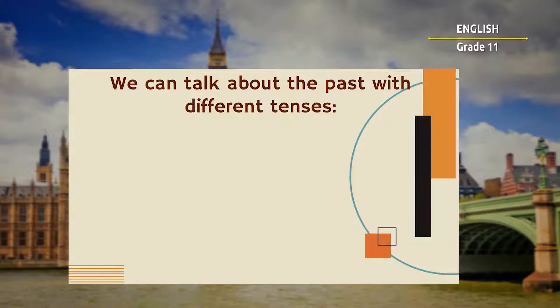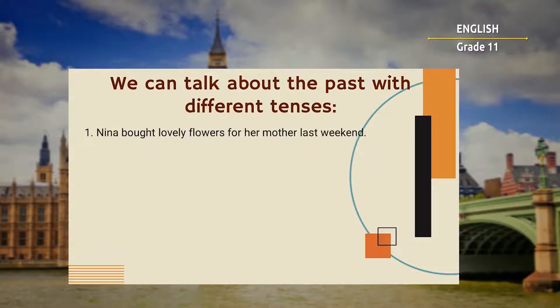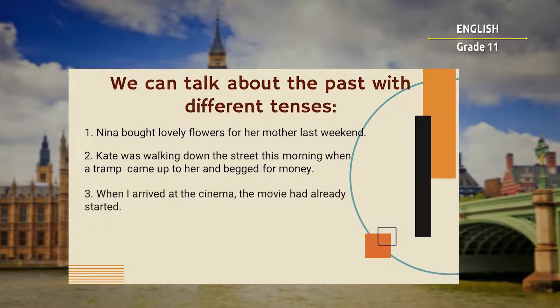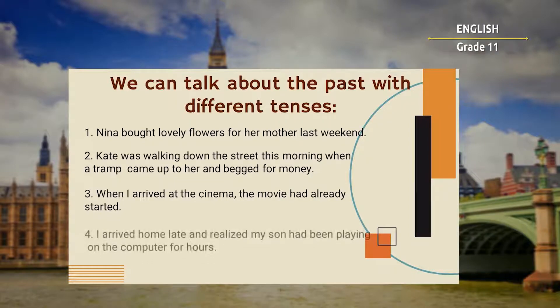So let's see the narrative sentences using these tenses. We can talk about the past with different tenses. Nina bought lovely flowers for her mother last weekend. Kate was walking down the street this morning when a tramp came up to her and begged for money. When I arrived at the cinema, the movie had already started. I arrived home late and realized my son had been playing on the computer for hours.